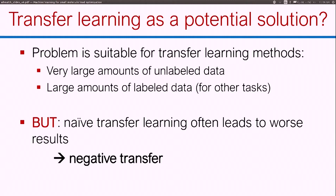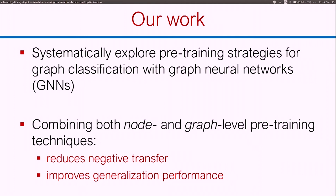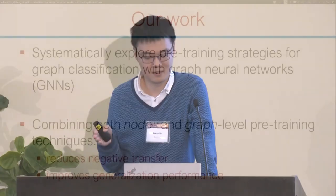In this work, we do a systematic exploration of different kinds of pre-training strategies, in particular with graph neural networks in a graph classification setting. And the conclusion for this work is that we need to combine both a node-level and a graph-level pre-training technique to reduce negative transfer and improve generalization performance.